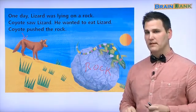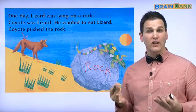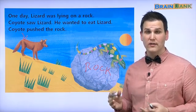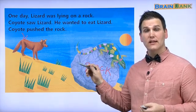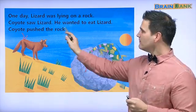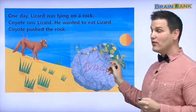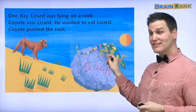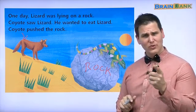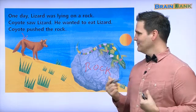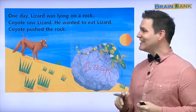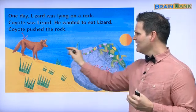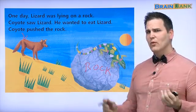This is coyote. Coyote is kind of like a dog, and he lives in very warm or hot weather, such as the desert — in the samak. The lizard was lying on the rock and coyote wants to eat him. Do you eat lizards? I don't eat lizards! But coyote loves to eat lizard. So how is he going to get the lizard into his mouth? He pushed the rock!